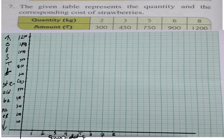Dear students of class 8, now I am going to make a line graph of the given equation. The equation is in the given table. The given table represents the quantity and the corresponding cost of strawberries. This side shows the cost of strawberries and this side shows the quantity of strawberries.